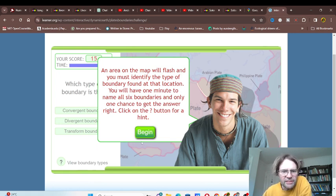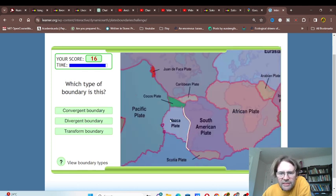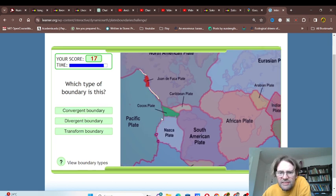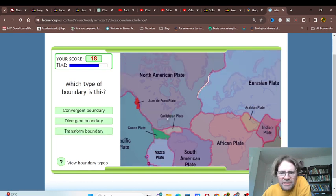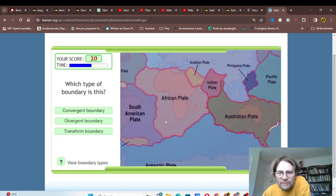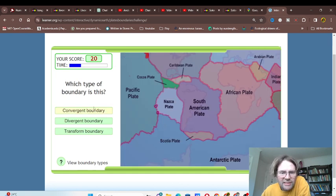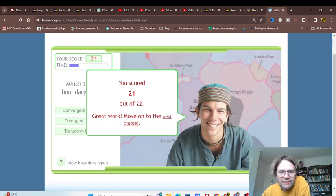We have one minute to name all six boundaries, and only one chance to get the answer right. So that one is a divergent boundary, that's a convergent boundary, that's a transform boundary, that's a divergent, that is a convergent. That one is, I think it's a convergent. Had to get one incorrect. This is probably divergent. Oh, 22, next chapter.